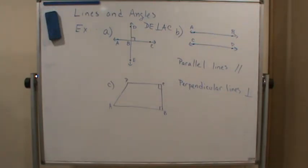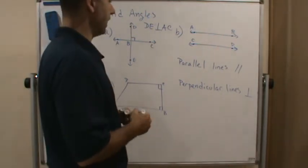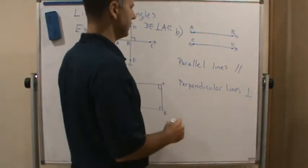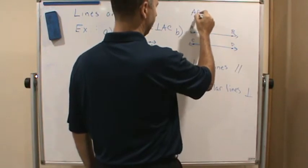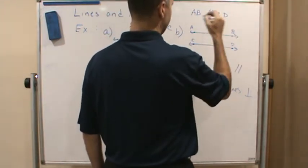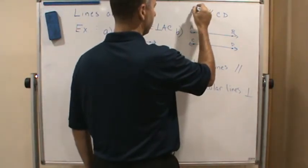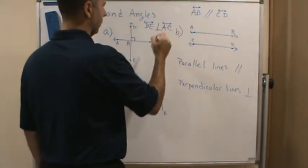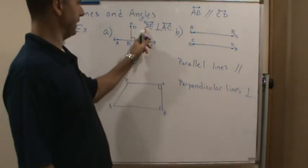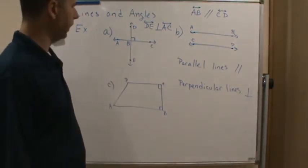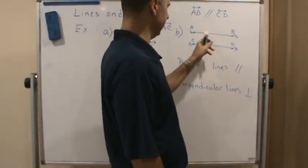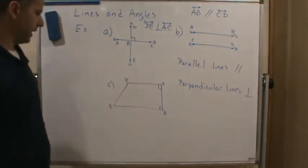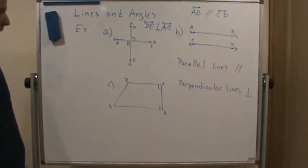If the lines are parallel, I use the other symbol. For example, if these two lines are parallel, I would say line AB is parallel to line CD. With lines we usually put a little line above it to distinguish them. Then we can look at figures and say which lines are parallel and which are perpendicular.